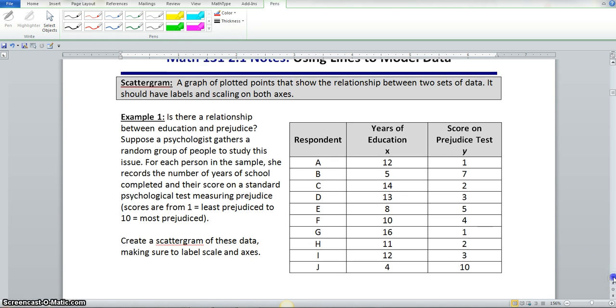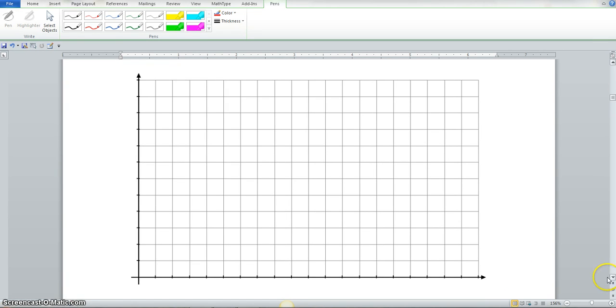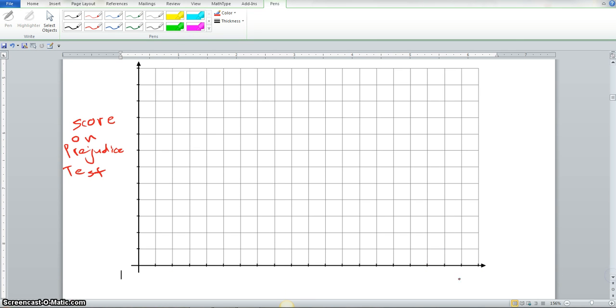Now we need to scroll down. We need to put these values on this graph. First of all, down the side here, we should have the score on the prejudice test. That should be your y-axis.